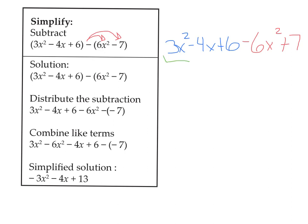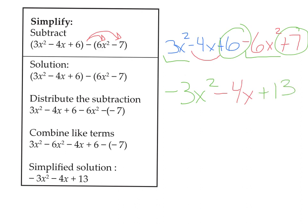Now we just combine like terms. Starting with the highest exponent, we have positive 3x² and negative 6x², which makes negative 3x². Then we have the x term — there's only one x term, so that's negative 4x. And the constant terms, positive 7 and positive 6, make positive 13. So we end up with negative 3x² minus 4x plus 13.